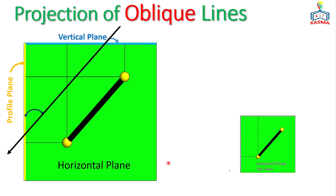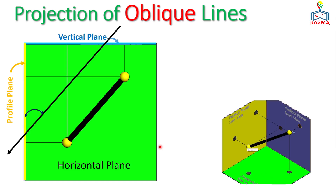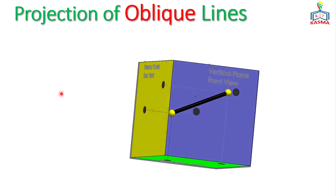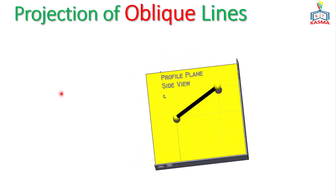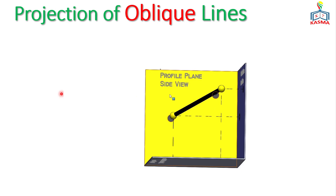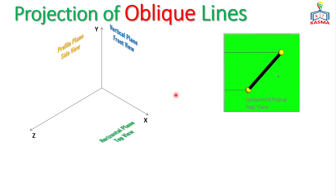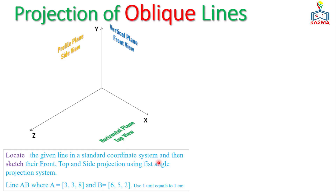This line is inclined to the vertical plane, profile plane, and horizontal plane — that is what makes it an oblique line. You can refer to other related videos on normal lines, inclined lines, and projecting a point via the links in the video description. Now here is an example: locate line AB in the standard coordinate system and sketch the front, top, and side projections using first angle projection. Line AB has point A at (3, 3, 4) and point B at (6, 5, 2), with one unit equal to one centimeter.